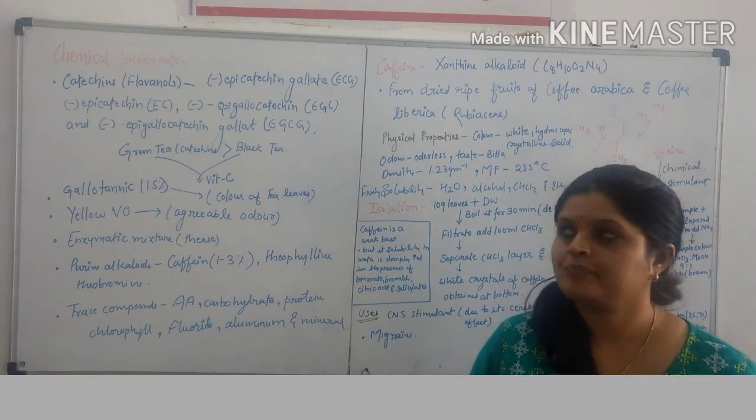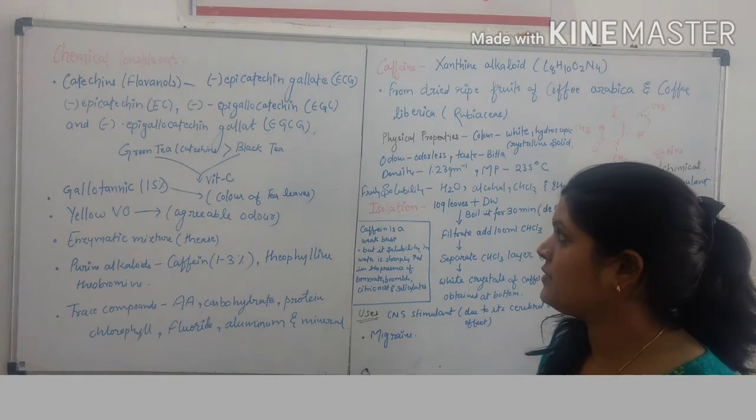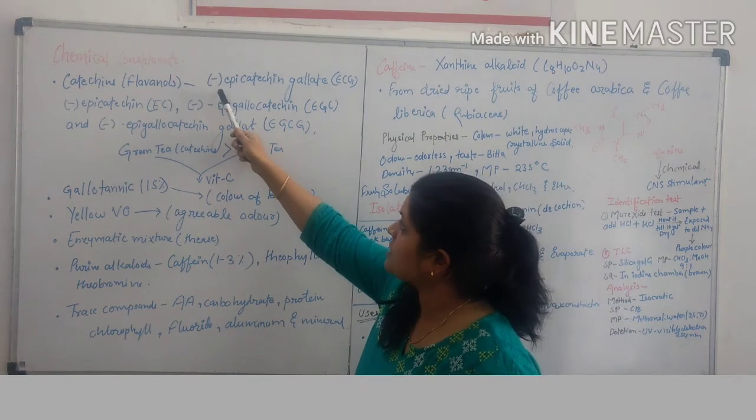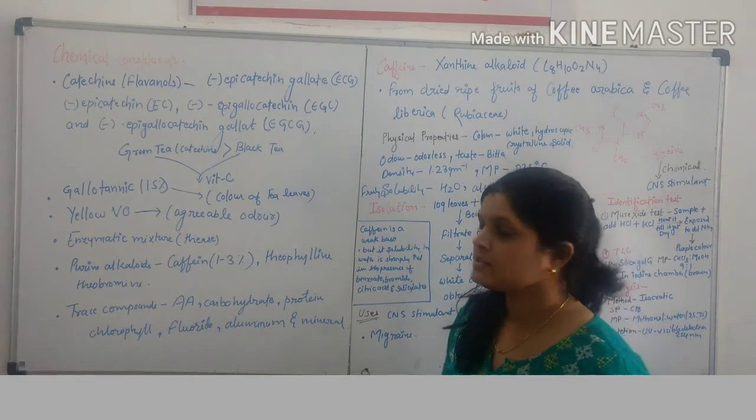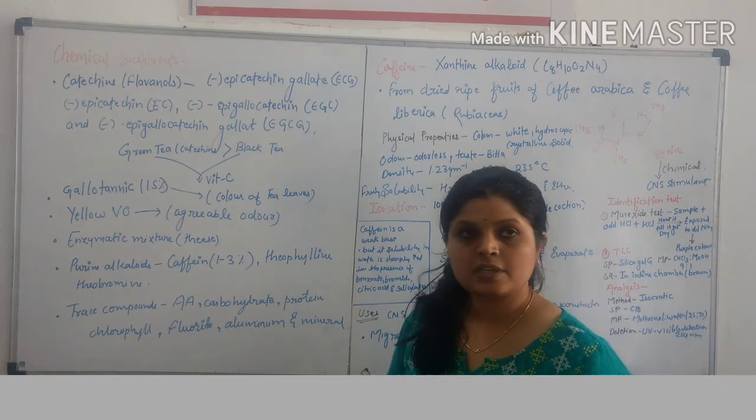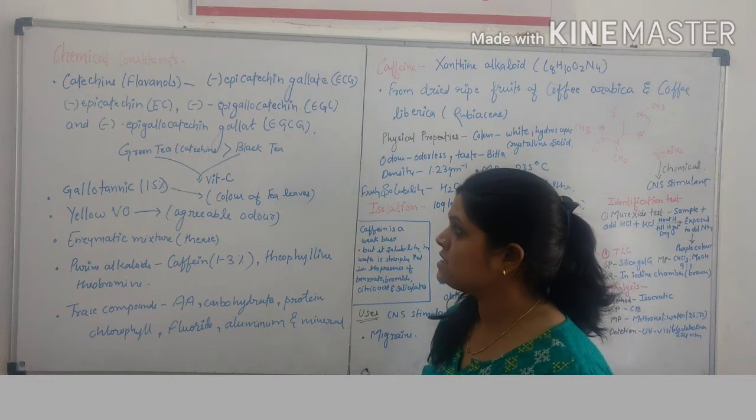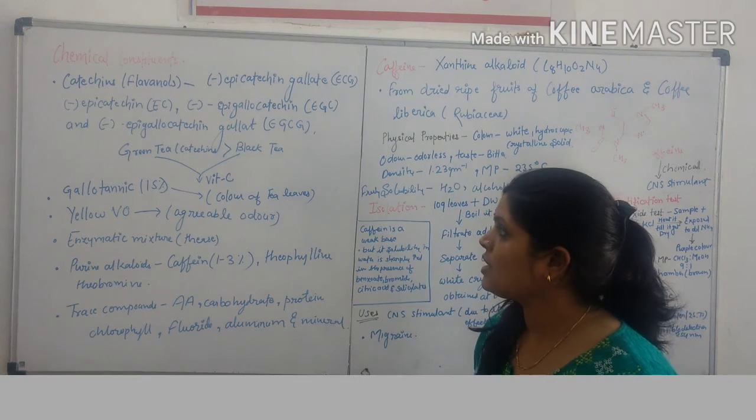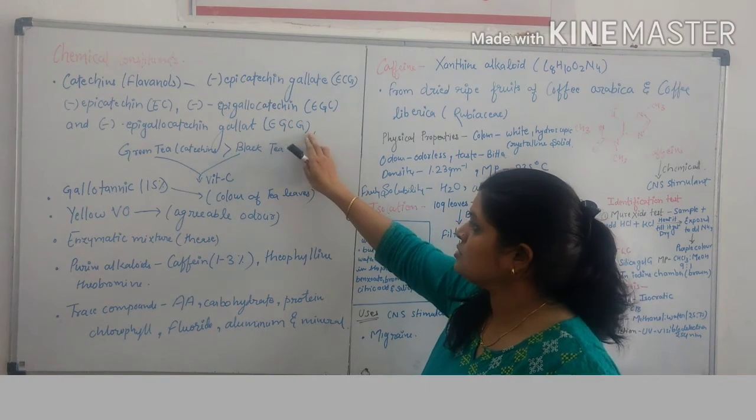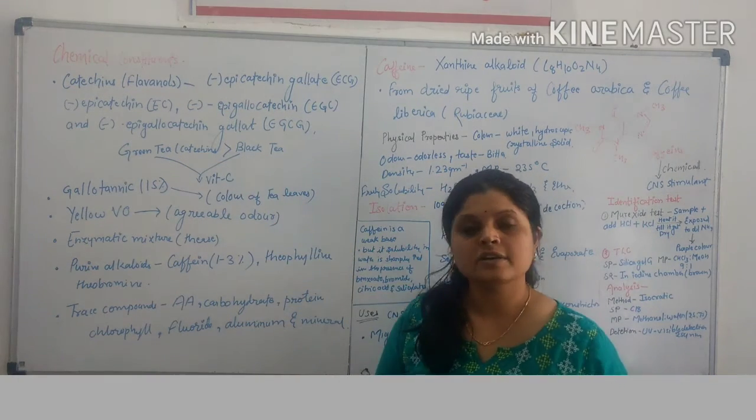Chemical constituents of tea: It contains catechin, a flavonoid derivative. Other catechins like epicatechin gallate (ECG), epicatechin (EC), epigallocatechin (EGC), and epigallocatechin gallate (EGCG). Green tea contains more catechin compared to black tea.